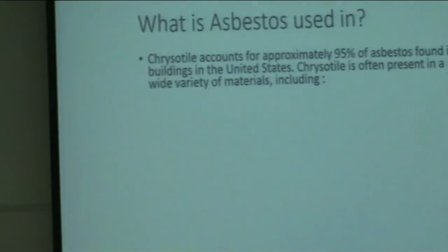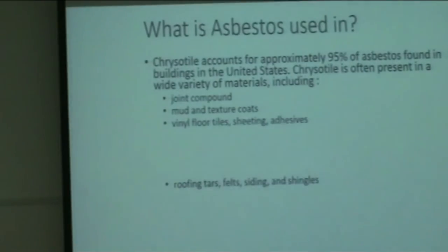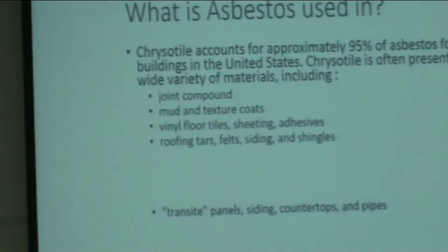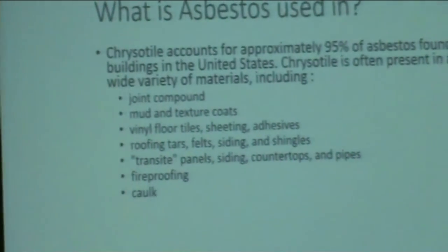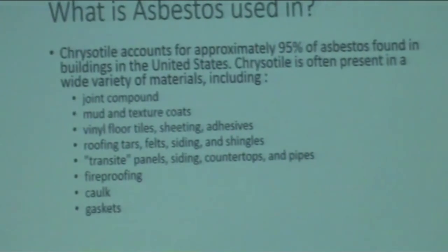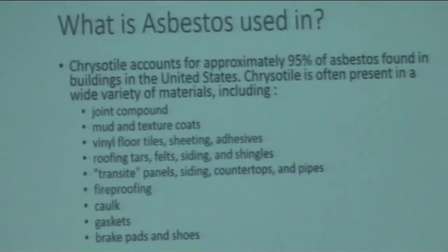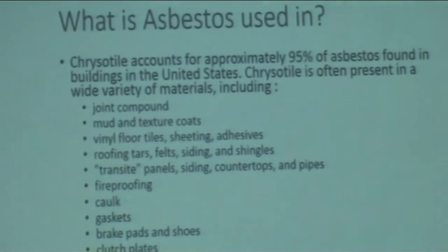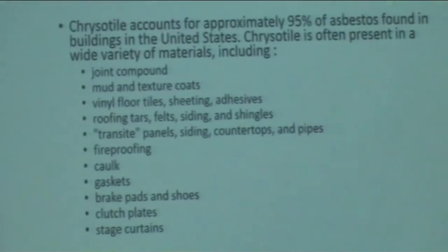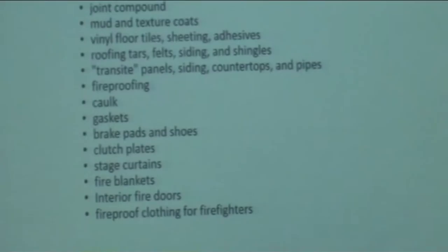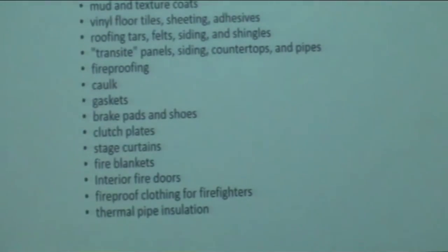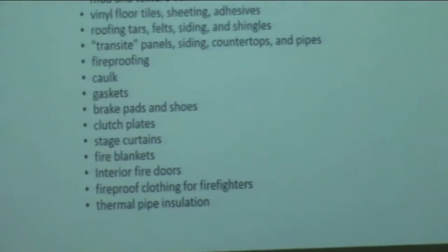What is asbestos used in? It is used in joint compounds, mud and texture coats, vinyl floor tile, sheeting, adhesives, roofing felt, siding, shingles, transit panels, countertops, pipes, fireproofing caulk, gaskets, brake pads, clutch plates, stage curtains, fire blankets, interior fire doors, fireproof clothing, and thermal pipe insulation. Those are just some of the uses.